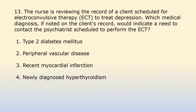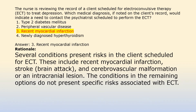The nurse is reviewing the record of a client scheduled for electroconvulsive therapy (ECT) to treat depression. Which medical diagnosis, if noted on the client record, would indicate a need to contact the psychiatrist scheduled to perform the ECT? Option 1: Type 2 diabetes mellitus. Option 2: Peripheral vascular disease. Option 3: Recent myocardial infarction. Option 4: Newly diagnosed hyperthyroidism. Answer 3: Recent myocardial infarction. Several conditions present risks in the client scheduled for ECT, including recent myocardial infarction, stroke, brain attack, and cerebrovascular malformation or an intracranial lesion. The conditions in the remaining options do not present specific risks associated with ECT.